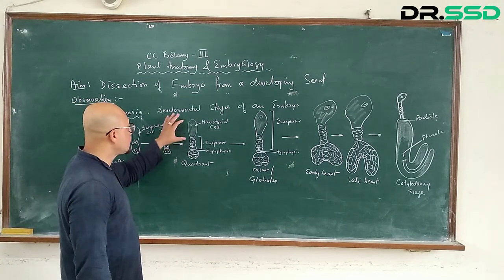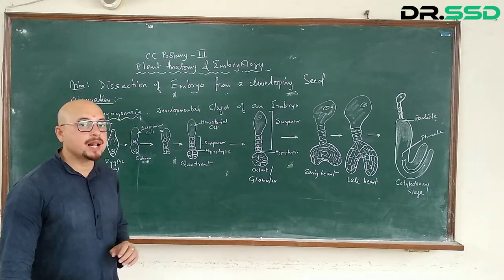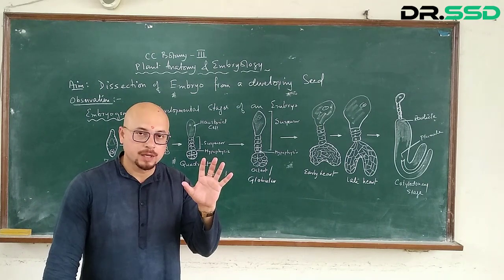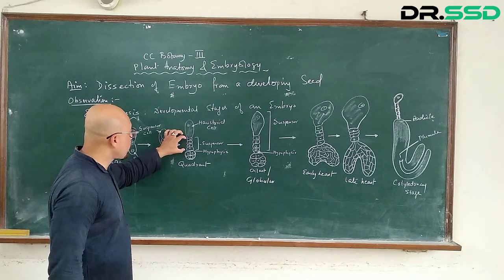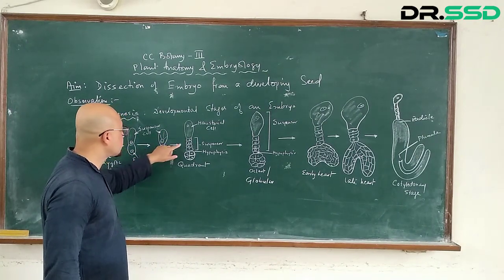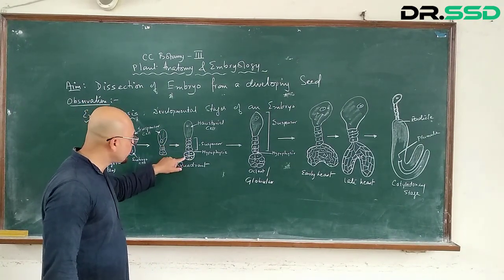Eventually the embryonal cell divides into two cells and this suspensor cell enlarges. And eventually this becomes the haustorial cell which helps in absorption of nutrients from the nucellus tissue. So the haustorial cell followed by the suspensor, because the suspensor has divided a lot mitotically and you can even see.